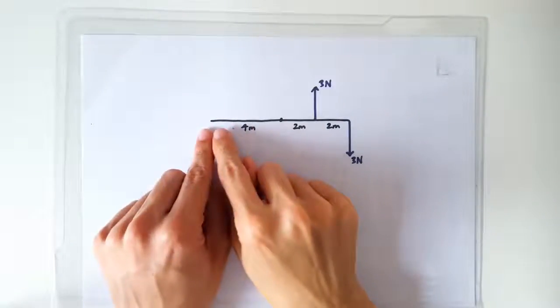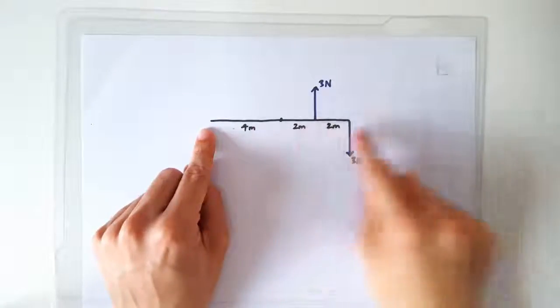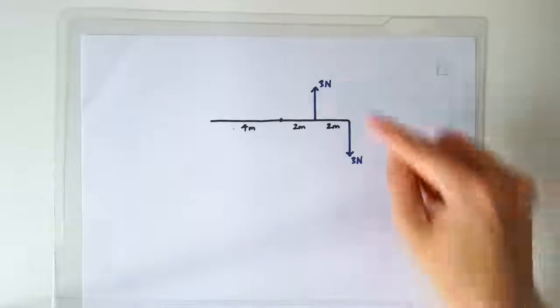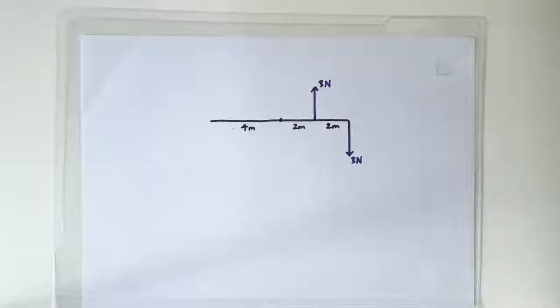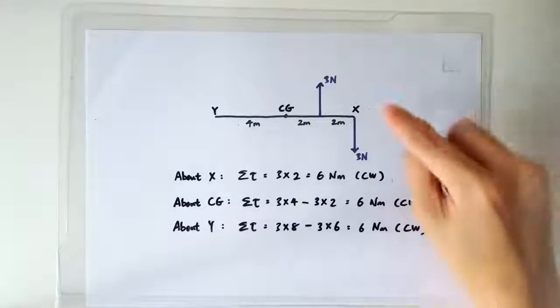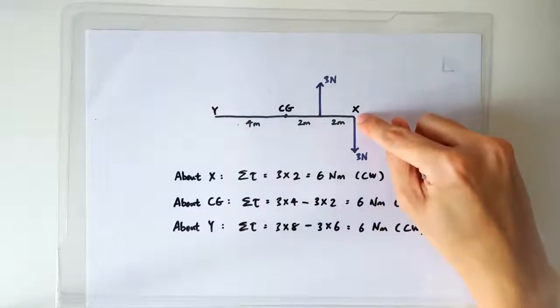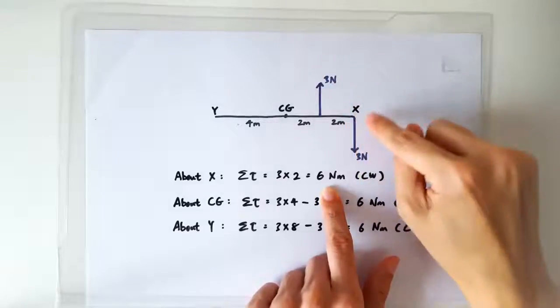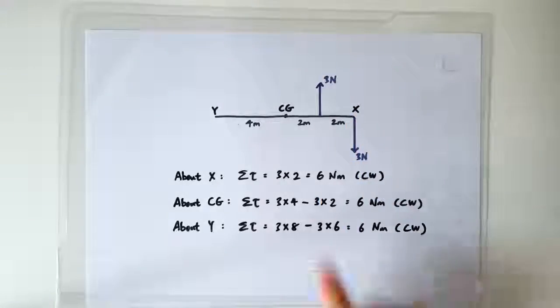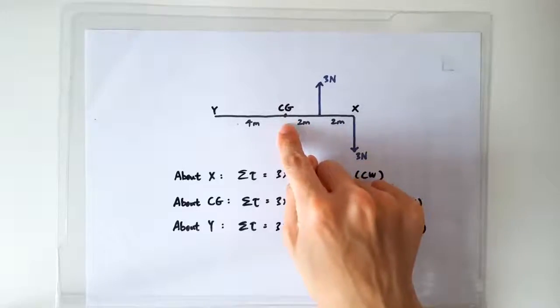So let's have here a uniform rod, 8 meters long, and it's experiencing 2 forces, 3 newtons here and 3 newtons here. If you calculate the net moment about this end of the rod, you're going to get 6 newtons meters, 3 times 2.